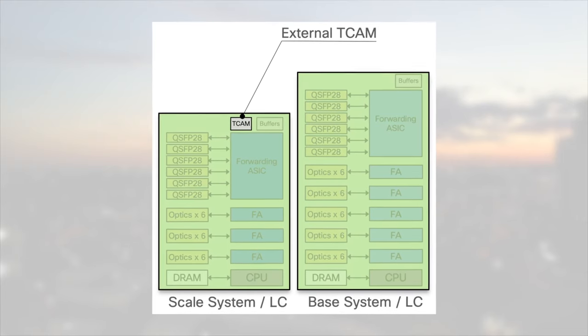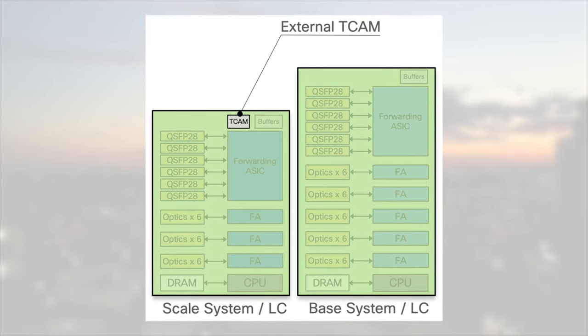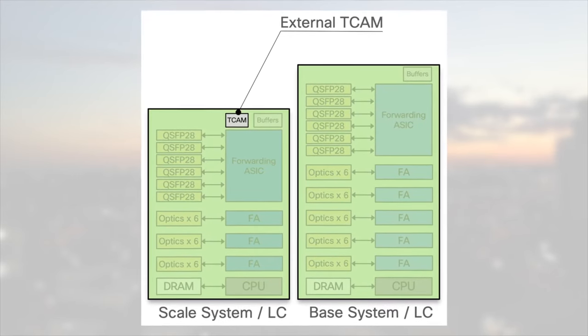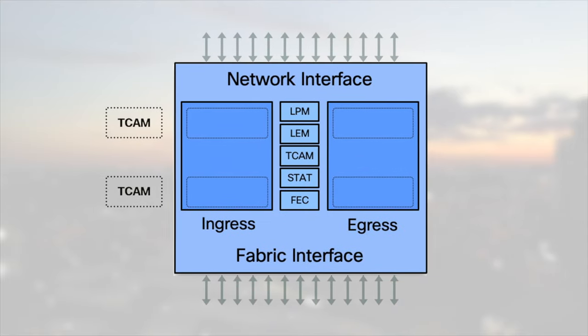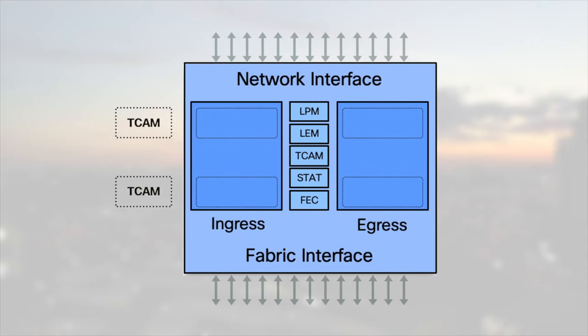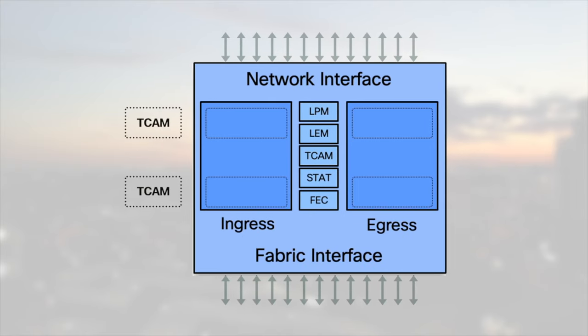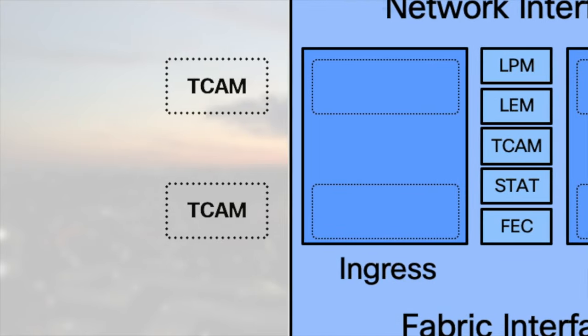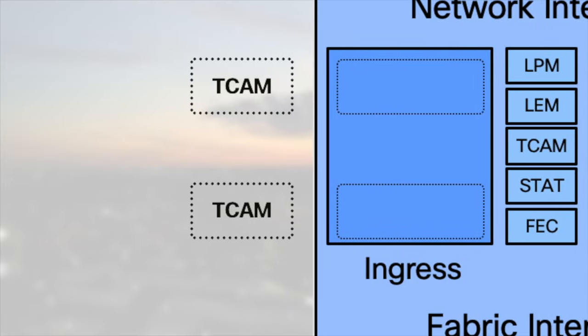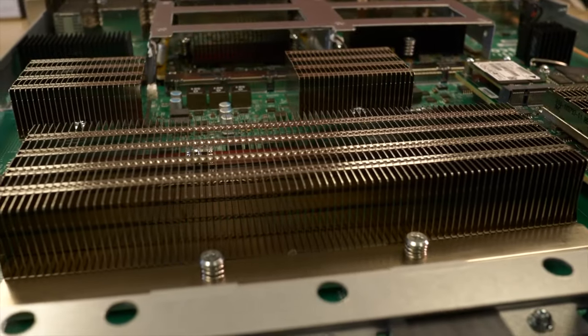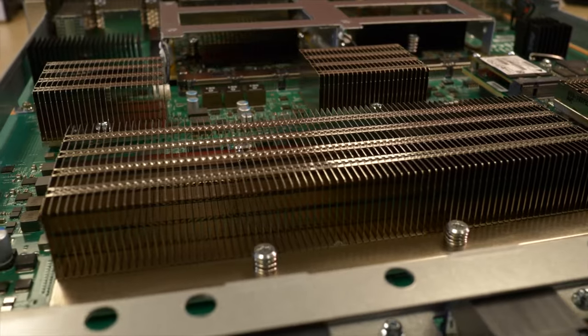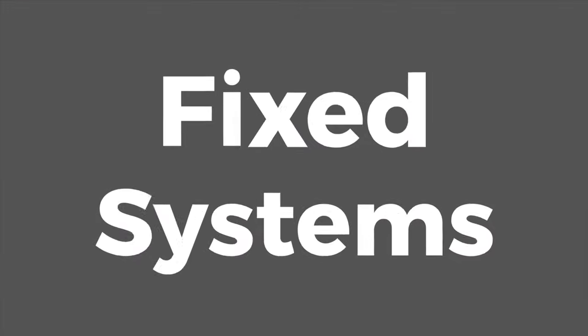Every time you hear me say "-SC", it means the ASIC is complemented by an external TCAM or ET-CAM. Each NPU is equipped with internal memories — LEM, LPM, FEC, or EEDB to list the most famous ones. The ET-CAM is an optional resource used for additional routing scale and classifiers. You cannot add this ET-CAM afterwards; it's not a field-replaceable part. In a "-SC" card or system, it's integrated in the PCB.